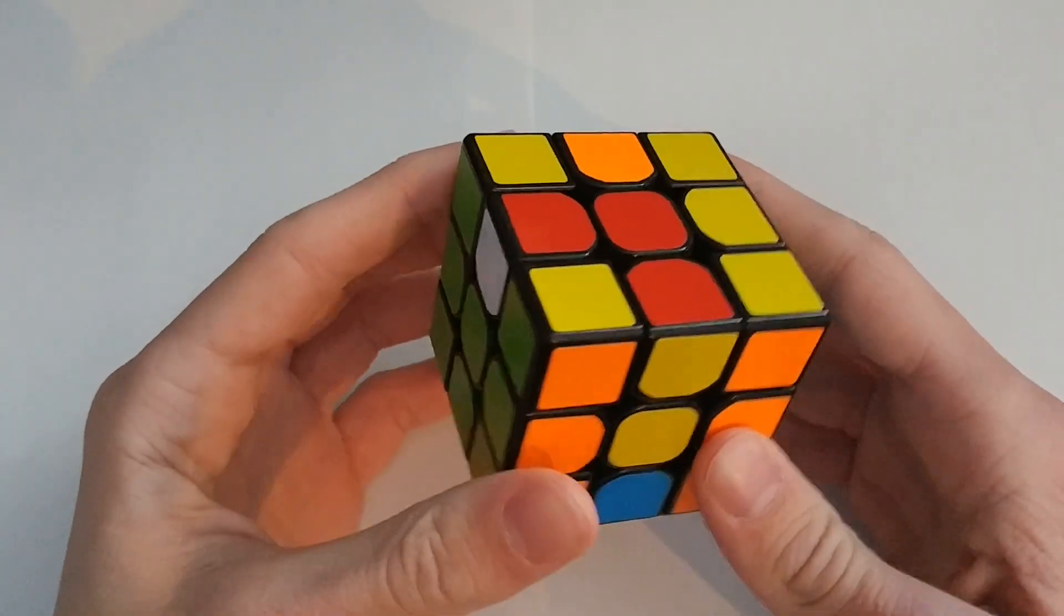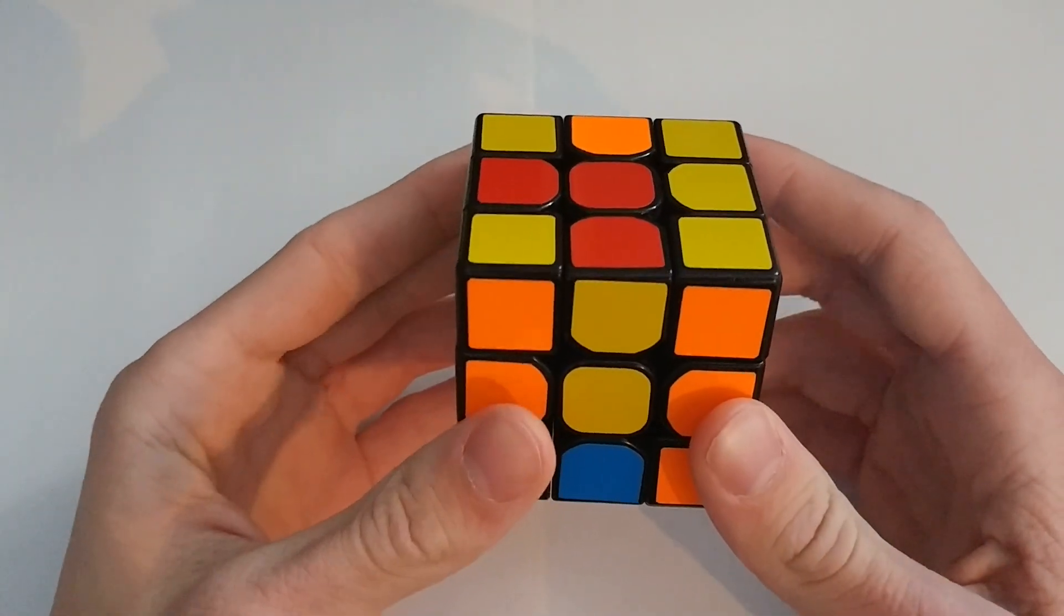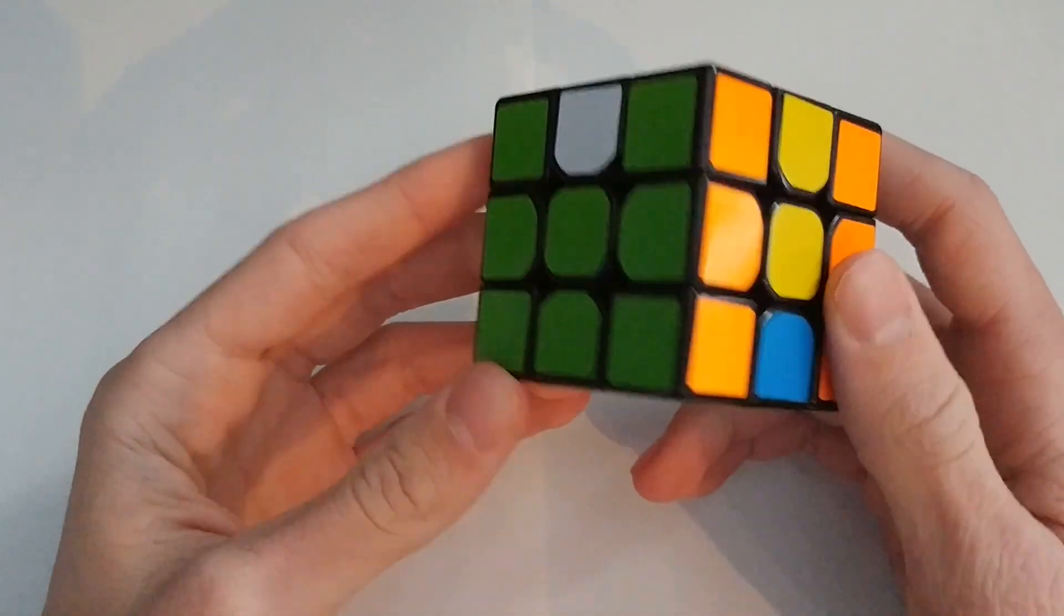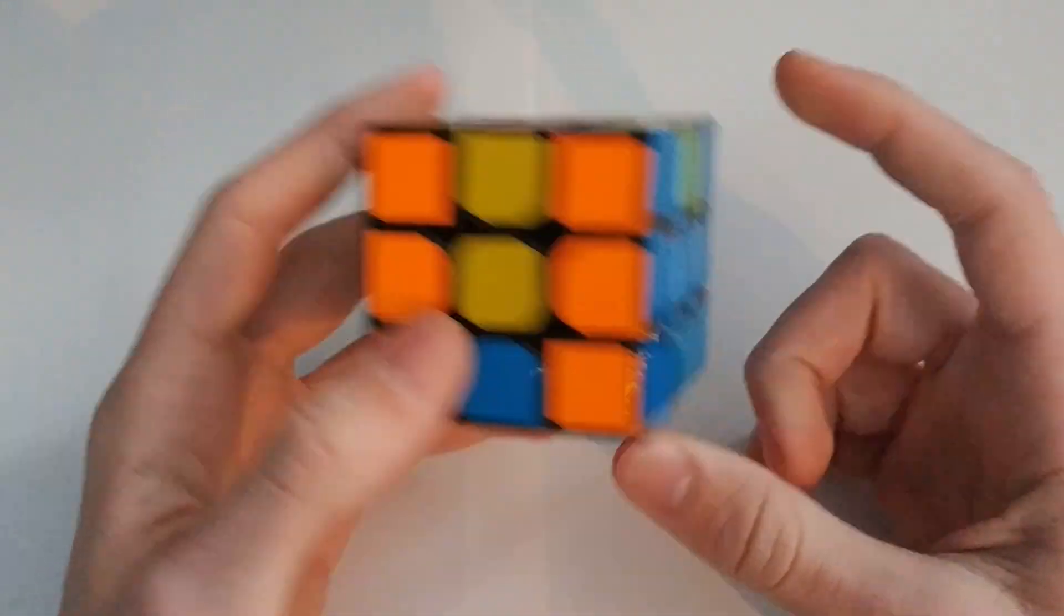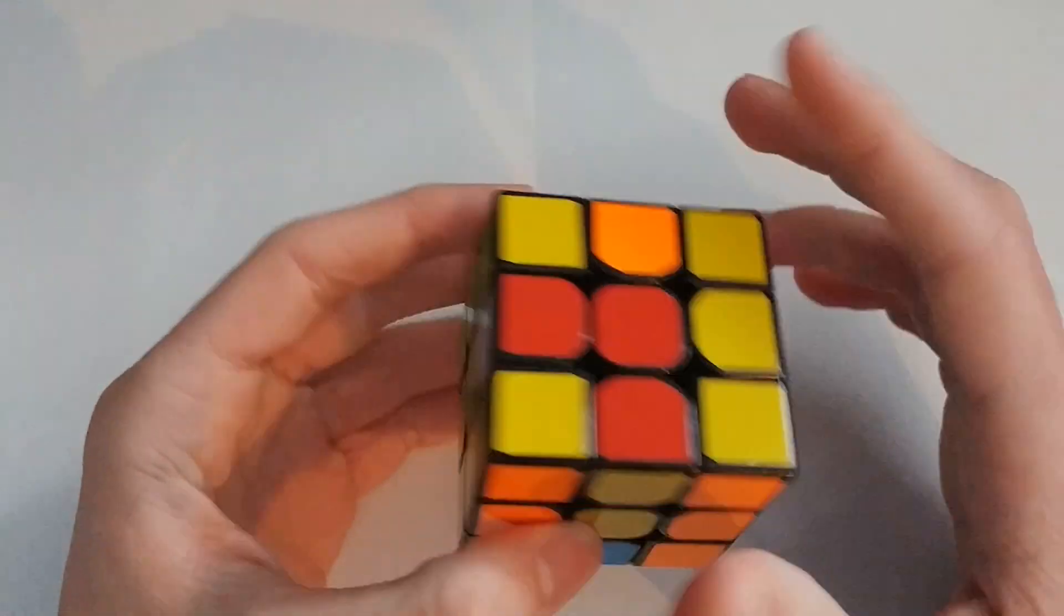All right, so this is a tutorial on 2-look CMLL. 2-look CMLL is after we finish the first block and the second block, we have to solve the four top corners.